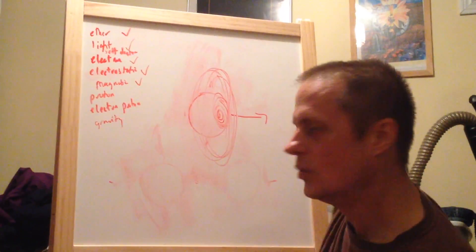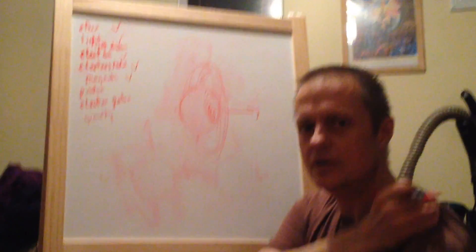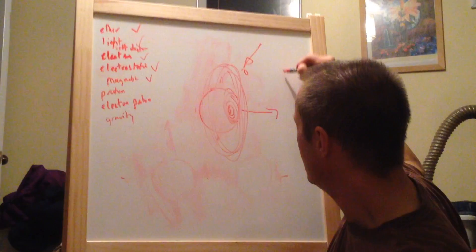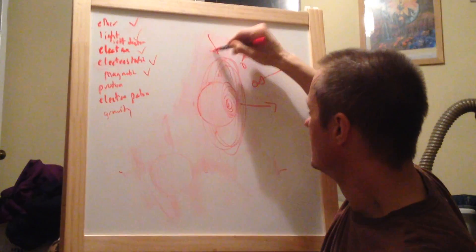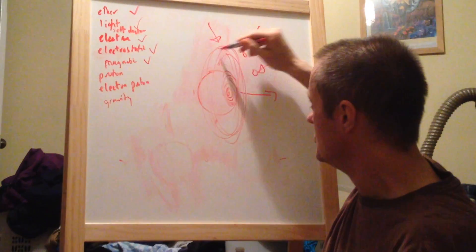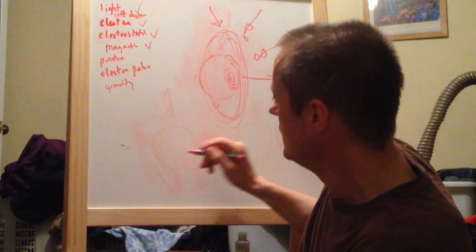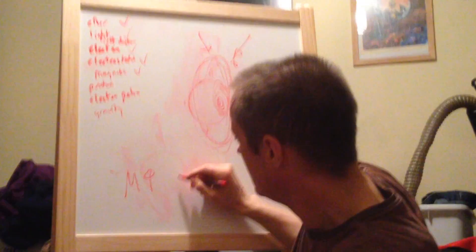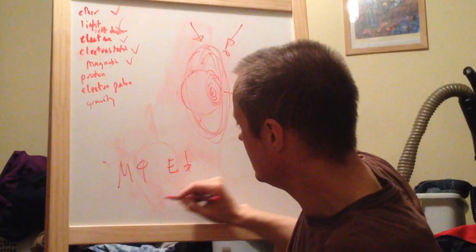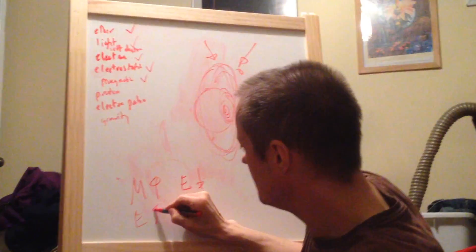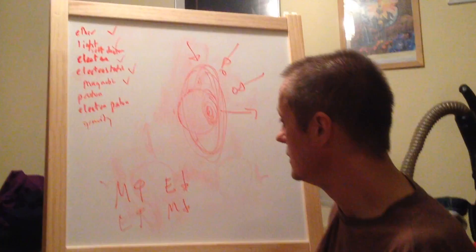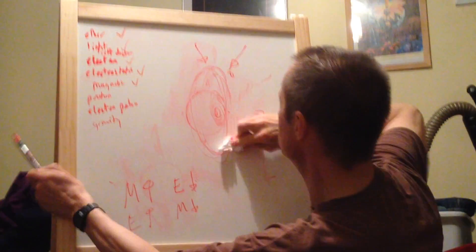The thing about, once you have a magnetic field around you, it's like a shield. So, you can't be hit as often by other ether particles, because you have a shield around you. So, as the magnetic field goes up, the electrostatic field goes down, and vice versa. As the electrostatic field goes up, the magnetic field goes down. So, that's electricity and magnetism.